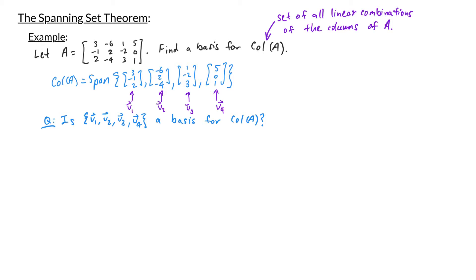By definition I know that the column space of A is the span of those four vectors, but we also need to check whether or not they're linearly independent. Without doing any calculations we can tell that V1 through V4 is not linearly independent because if they were linearly independent they would span a four-dimensional space. But the column space of A is within R3, so the vectors V1, V2, V3, V4 can't possibly span a four-dimensional space.